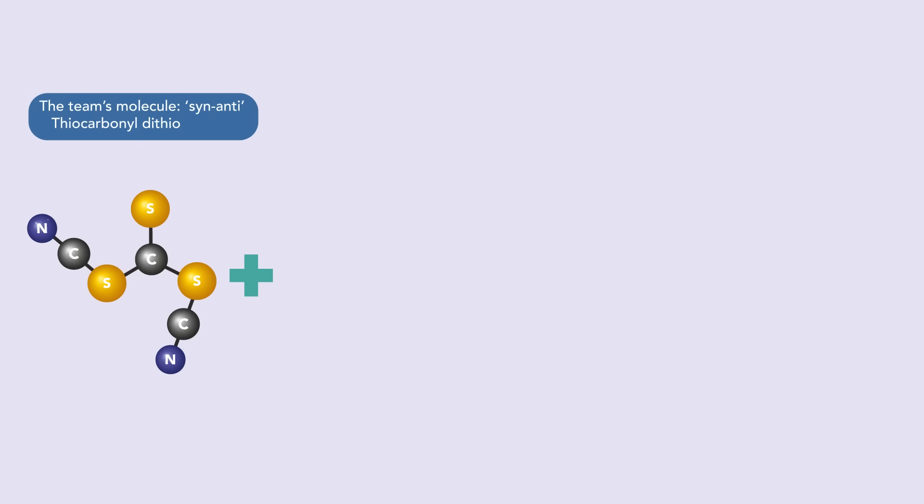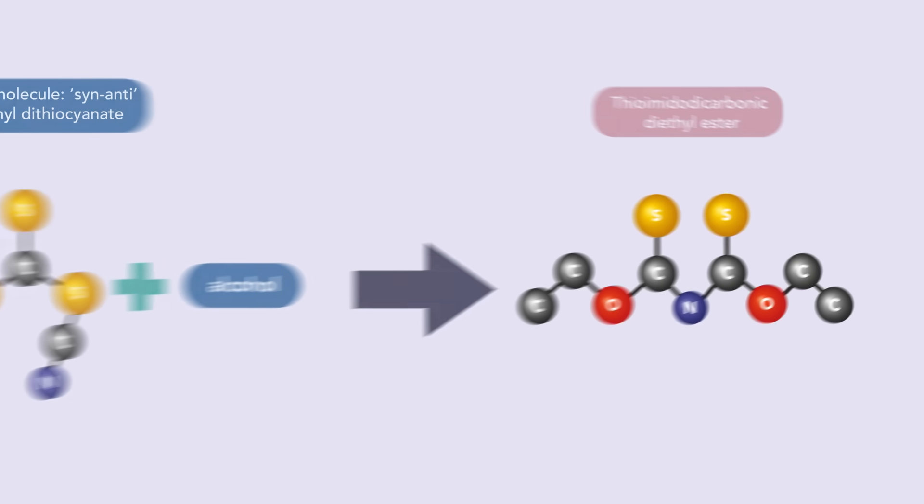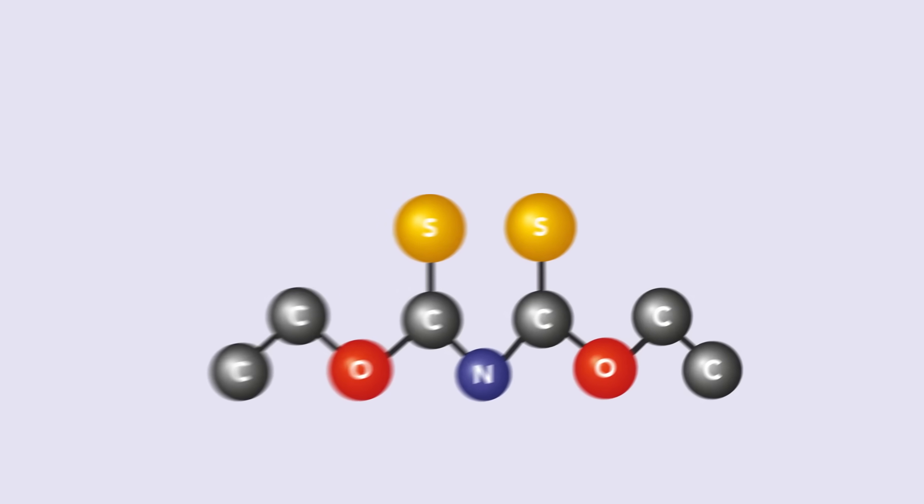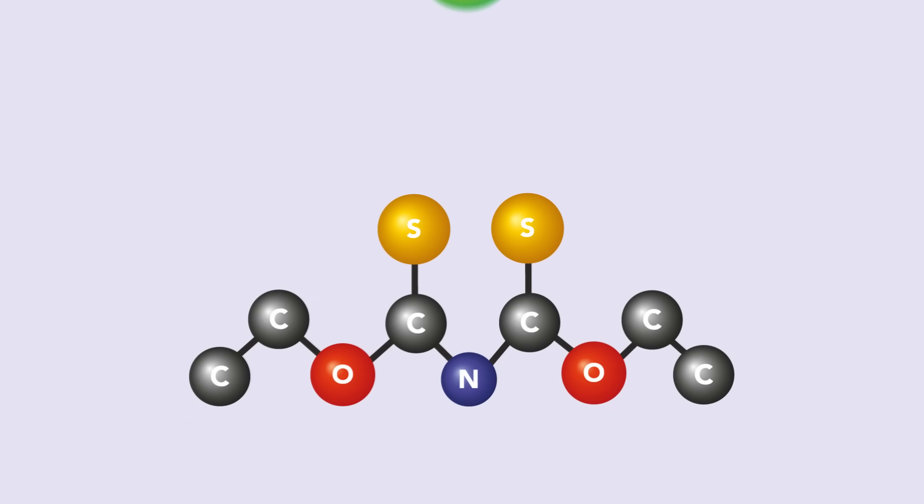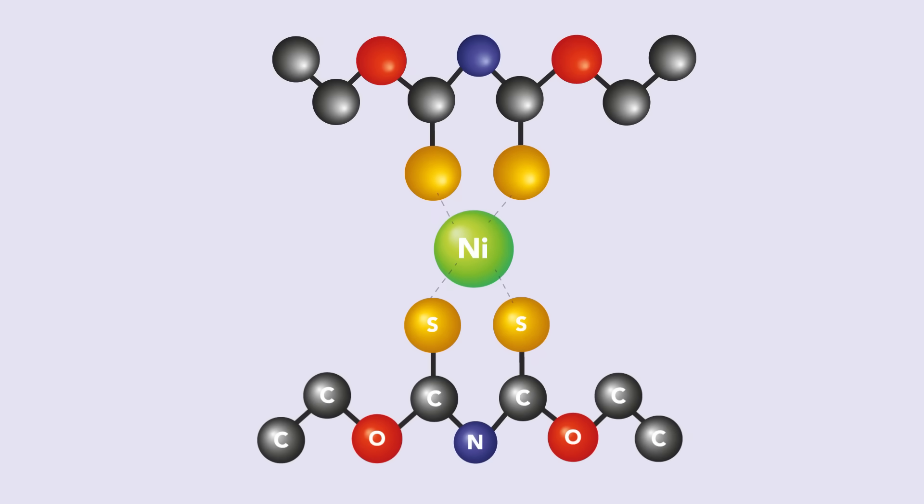They then decided to test how thiocarbonyl dithiocyanate reacts with other substances. When they added alcohol, they synthesized a molecule called thioimido-dicarbonic diethylester that had never been made before. This molecule, in turn, turned out to be useful for capturing metal atoms. For instance, it was able to lock around a nickel atom to form a neat square.